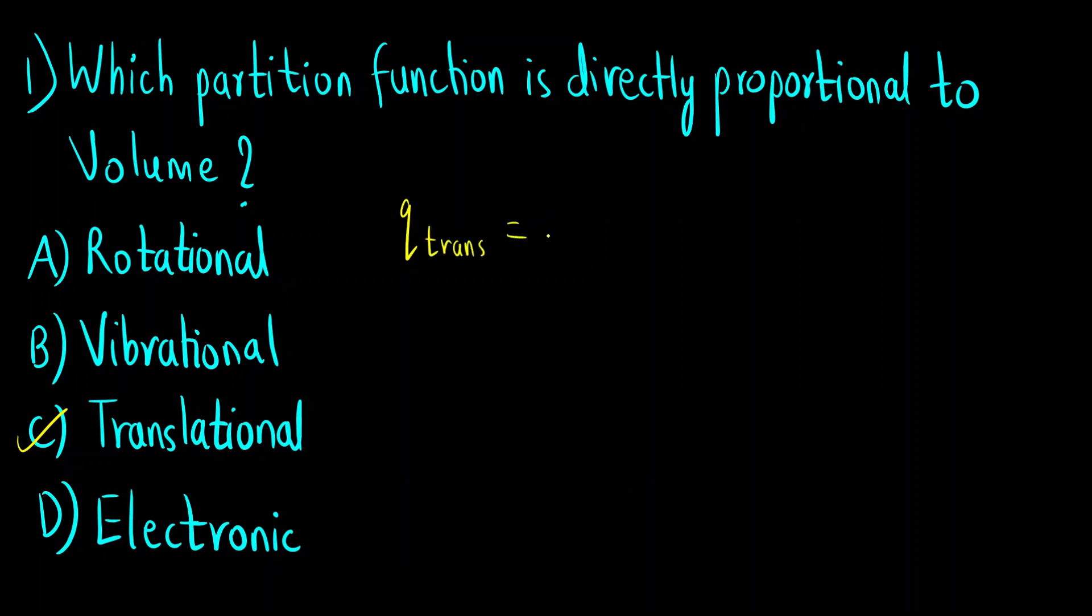Q translational is equal to root of 2πmkbT/h into length. Let us say we are studying the x direction. Then length will be Lx. This is for a 1D box. But if I want to study for a 3D box what I will do? I will take the cube.